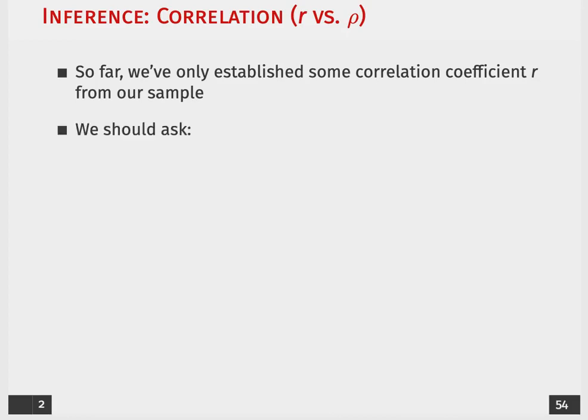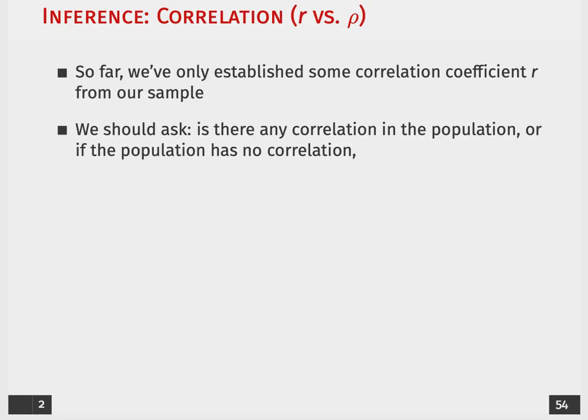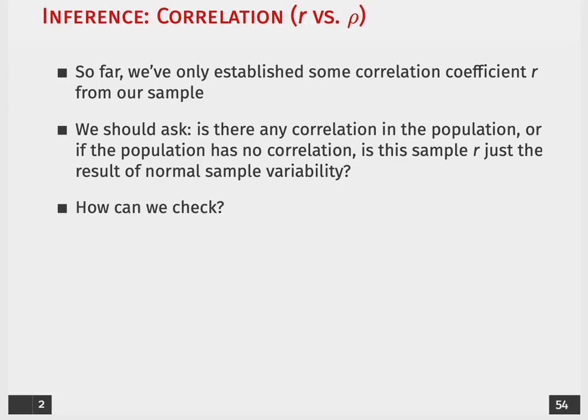And that's what we're going to really be talking about today. We want to not only ask, is there a correlation in the population, we want to also ask if the population has no correlation, is this sample producing a correlation coefficient that's just going to be the result of some normal sampling variability? We'll anticipate that there's going to be some samples that we'll get that are just going to be abnormal variations of what we observe. So we want to know, is this one of those instances, or are we actually observing a correlation that exists in the population?